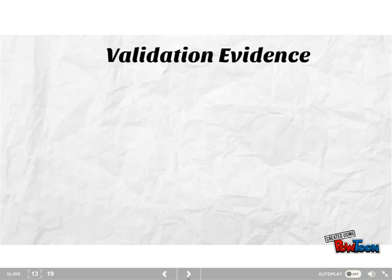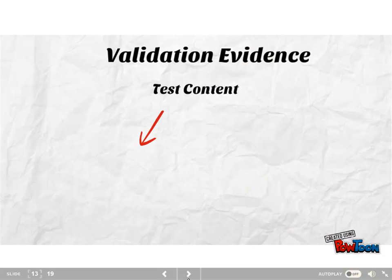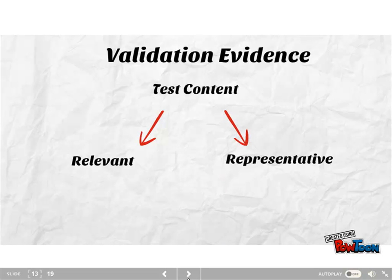So let's look at evidence. First is test content. The content of a test should be relevant to what I'm trying to measure — we don't want irrelevant content. Second, the content should be representative; it shouldn't leave out something important to what I want to measure.